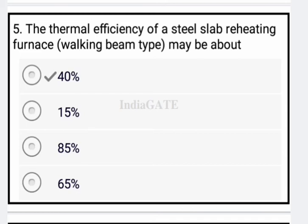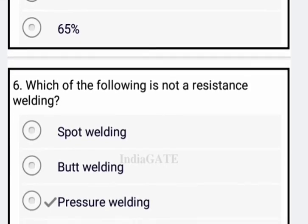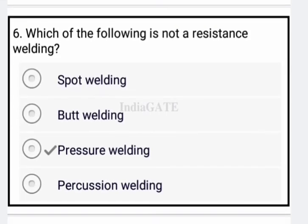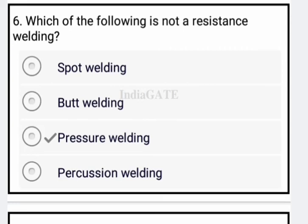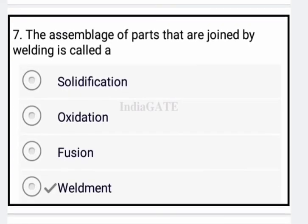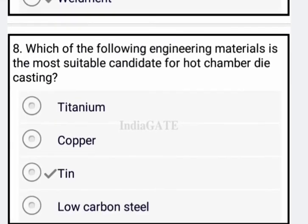The thermal efficiency of a steel slab reheating furnace may be about 40% — option B is your correct answer. Next: which of the following is not resistance welding? Pressure welding is not resistance welding — option C is correct. Next: the assemblage of parts that are joined by welding is called a weldment — option D is your correct answer.